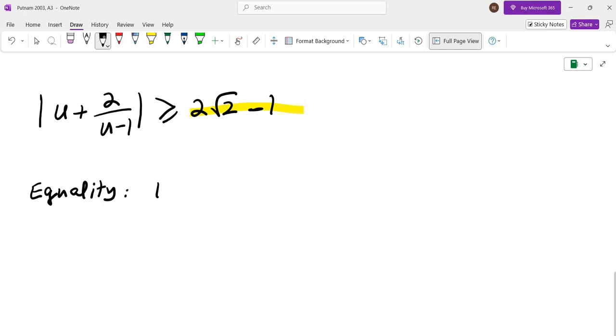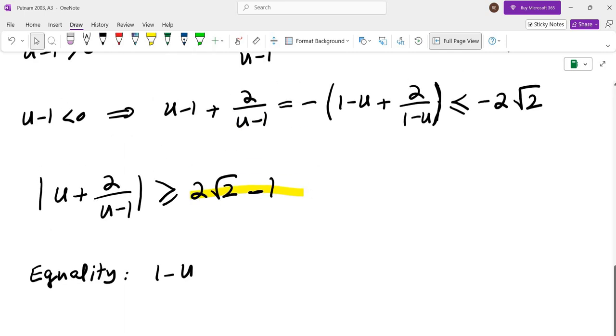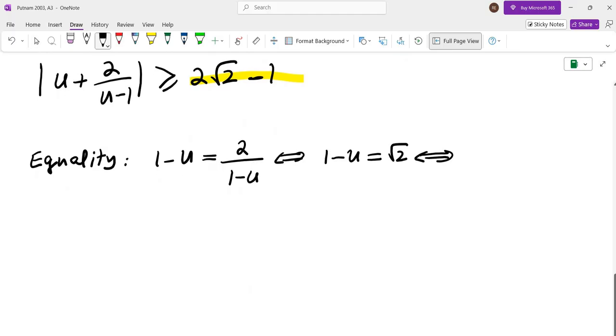So when does the equality hold? Well, equality holds if when we use the AM-GM, we have the equality for AM-GM. And this is the same thing as one minus u equals root two, which tells us u would have to be one minus root two.